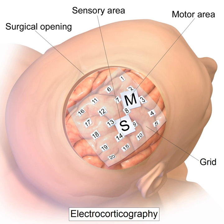ECoG was pioneered in the early 1950s by Wilder Penfield and Herbert Jasper, neurosurgeons at the Montreal Neurological Institute. The two developed ECoG as part of their groundbreaking Montreal procedure, a surgical protocol used to treat patients with severe epilepsy. The cortical potentials recorded by ECoG were used to identify epileptogenic zones — regions of the cortex that generate epileptic seizures — which would then be surgically removed during resectioning, destroying the brain tissue where epileptic seizures had originated.